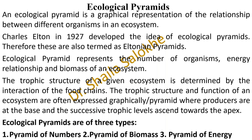These food chains involve producers, primary consumers, secondary consumers, tertiary consumers and so on. Thus, this nutritive series of a given ecosystem is determined by interaction of these members of the food chains. The trophic structure and function of an ecosystem are often expressed graphically in the form of pyramids where producers are at the base and the successive trophic levels ascend towards the apex.